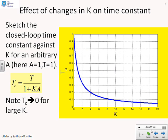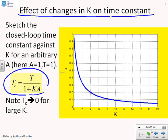What about the effect of changes in proportional gain on the time constant? This is the formula: the closed-loop time constant is capital T over 1 plus KA. Again, I'm going to set A equal to 1, and for normalization, the open-loop T is 1. What happens now as I increase K? At K equals 0, I get T equals 1, basically the open-loop time constant.